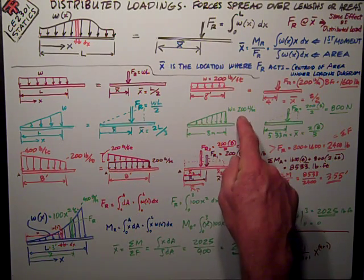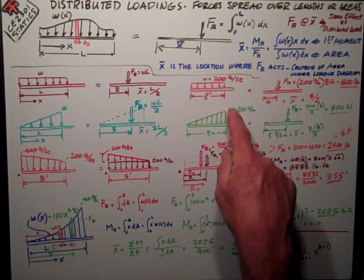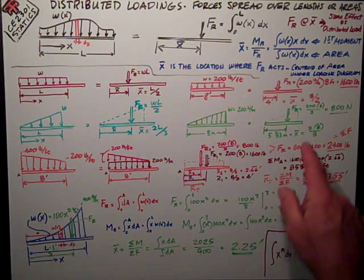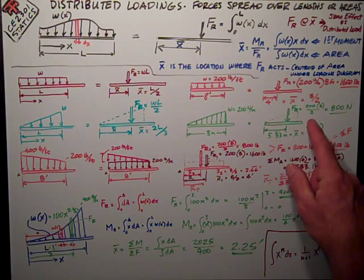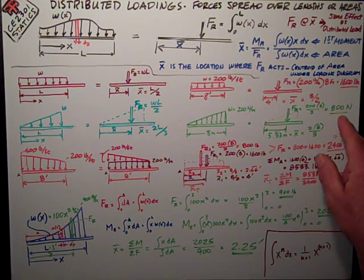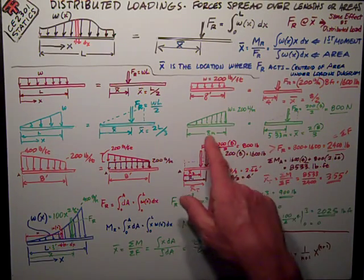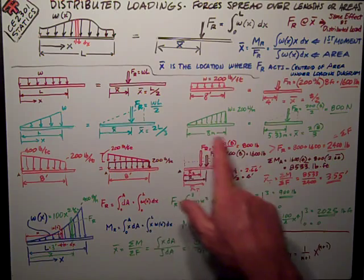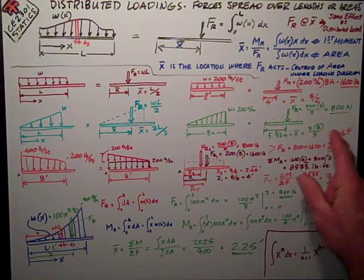Putting some numbers to it again. If I have w is 200 newtons per meter at this peak value here, it's over 8 meters. My force resultant is 200 times 8 divided by 2, just the area of that triangle, 800 newtons. The x-bar distance is two-thirds of the distance from the tip, 5.33 meters, which is just 2 times 8 divided by 3.